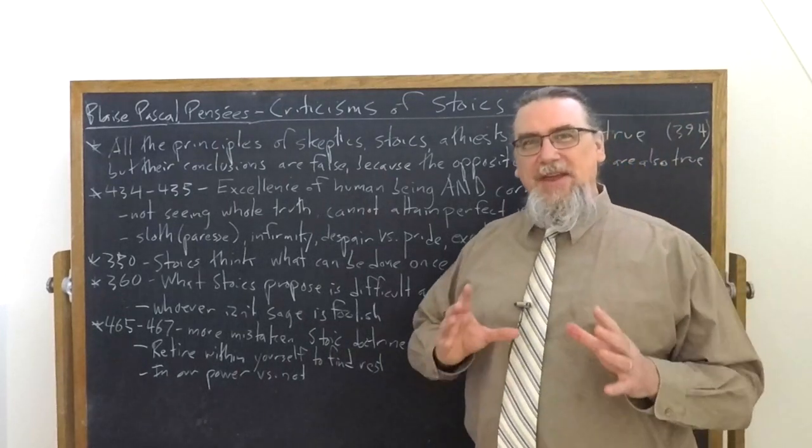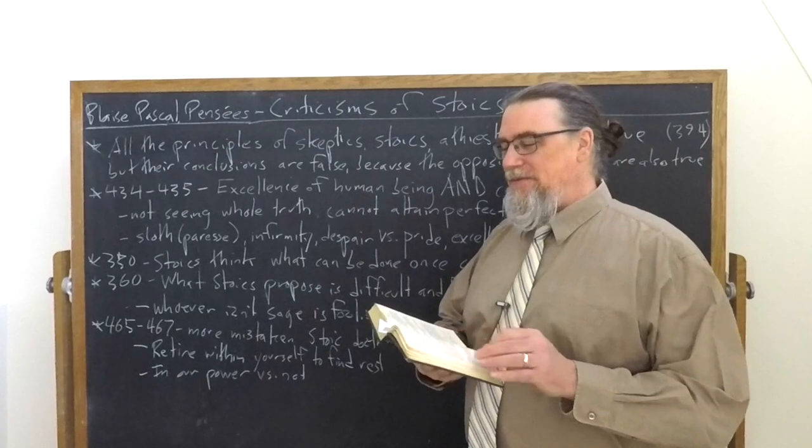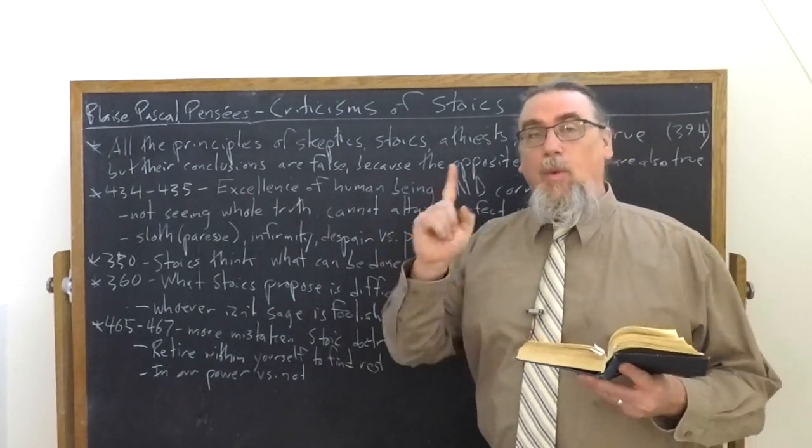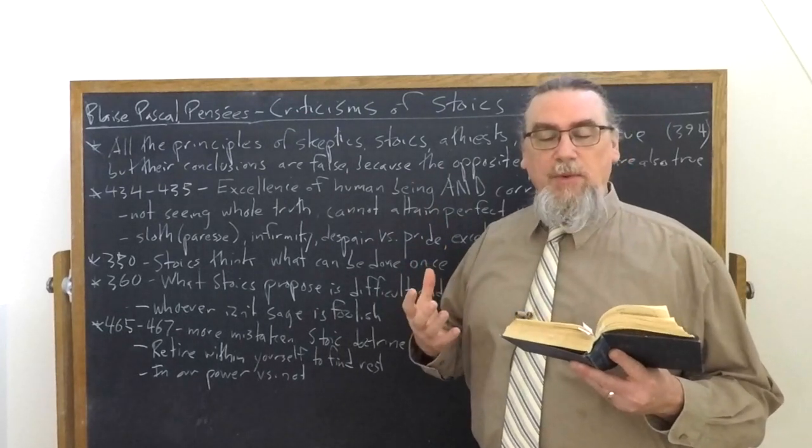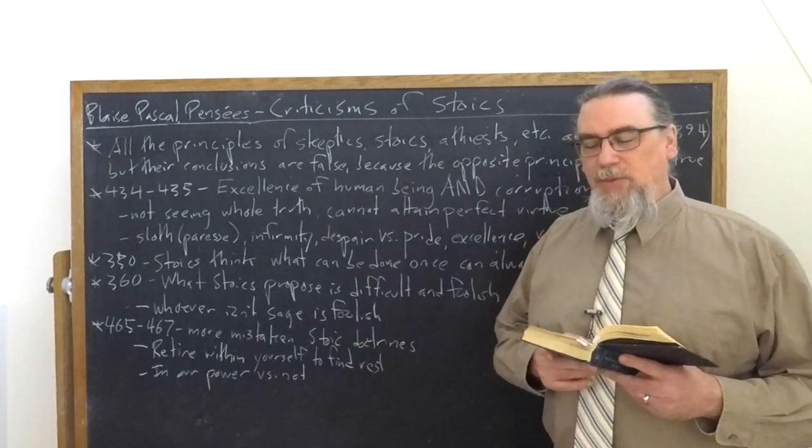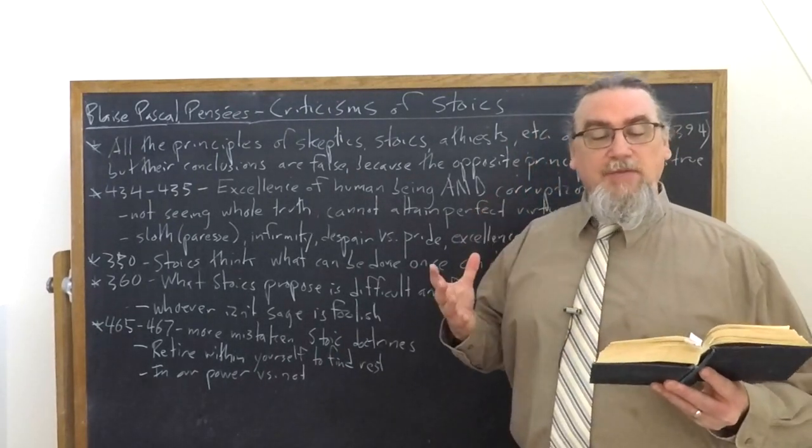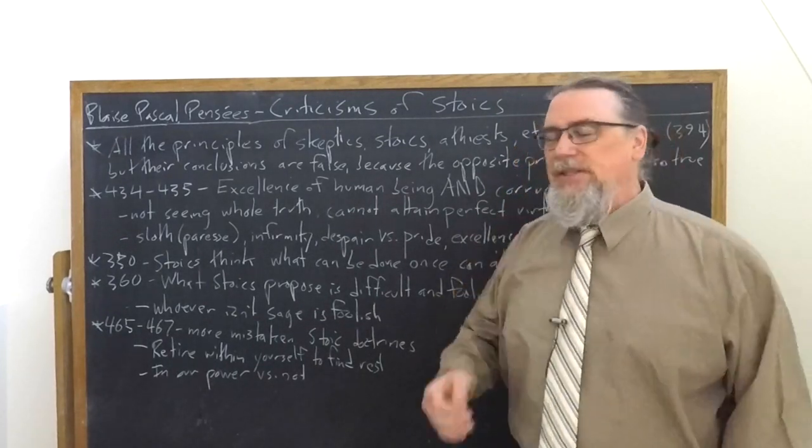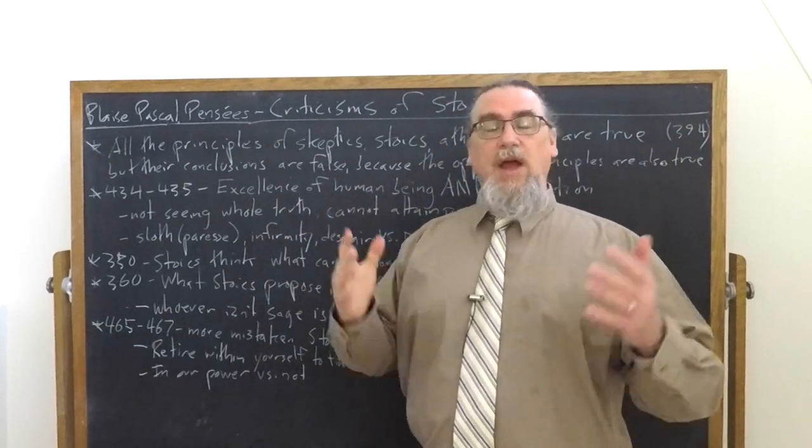Which side are they selecting? Well, we see this in section 350. This is the fundamental mistake that he thinks that they make, the Stoics. It's actually titled that this paragraph, they conclude that what has been done once, at one point in time, can be done always. And that since the desire of glory imparts some power to those whom it possesses, others can do likewise. And he has a very interesting analogy here. He says there are feverish movements which health cannot imitate. So he's actually going to, the next couple paragraphs, he'll say the strength of a person's virtue must not be measured by their efforts, but their ordinary life. What it is that they're capable of consistently day to day. And so the Stoics, they look at human beings and they're like, wow, that person is able to not fear death. Therefore, that's possible for all of us.